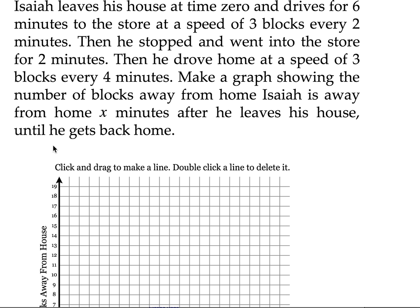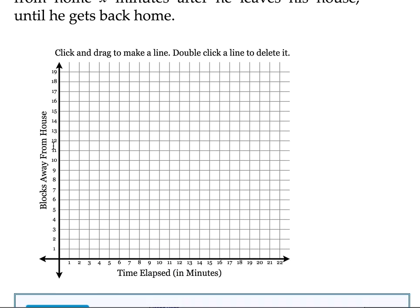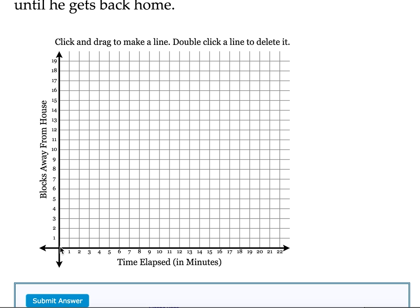He's going to drive for 6 minutes to the store at a speed of 3 blocks every 2 minutes. I'm going to put my mouse here at 0, 0. I'm going to click down on the mouse. He drives 3 blocks every 2 minutes and he's going to go for a total of 6 minutes.